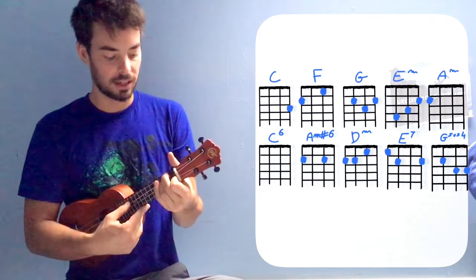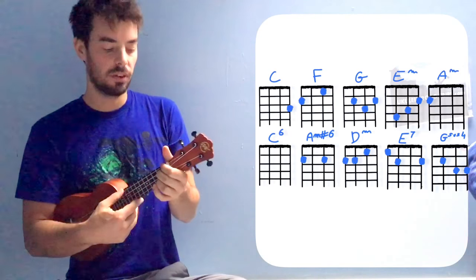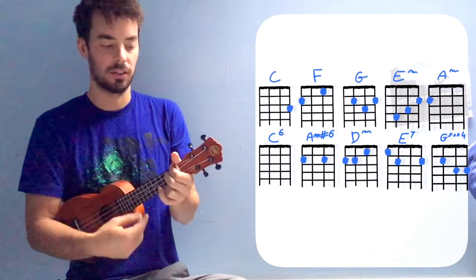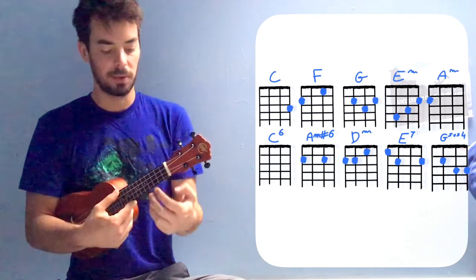D minor, 2nd, 2nd, 1st, open. E7, 1st, 2nd, open, 2nd, with your 3 middle fingers.